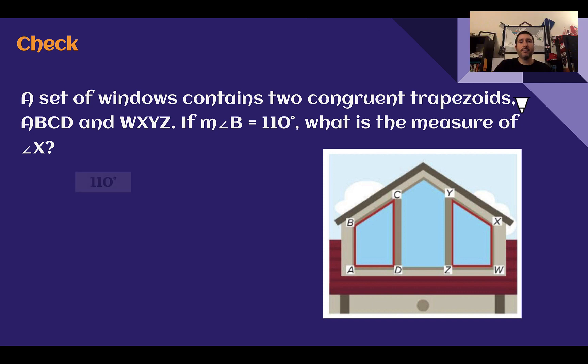Check your answer. You should have said angle X is 110 degrees. If measure of B is 110, so here's 110, this is just a reflection across like the middle there. So C would correspond with Y, B with X, A with W, D with Z. If B is 110, then X is that same angle reflected across, so it would also be 110.